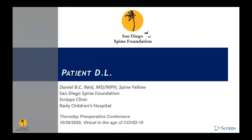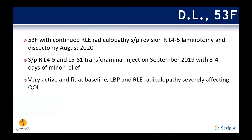This is a patient that we presented last week, so I'll briefly go through the previous history for everyone who was not there, and then we'll talk about what we did. This is a 53-year-old female who presented with continued right lower extremity radiculopathy after a revision right L4-5 laminotomy and discectomy that was performed in August of this year.